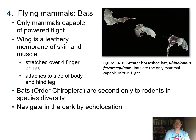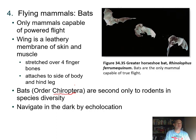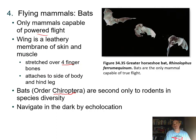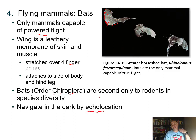One group of mammals can do powered flight: bats, order Chiroptera. They are second only to rodents in mammalian diversity. Their wings are skin stretched over elongated finger bones—four finger bones—attached even to the hind limbs. Bats are also known for echolocation—they emit ultrasound that bounces off objects, allowing them to navigate and find prey even in darkness.